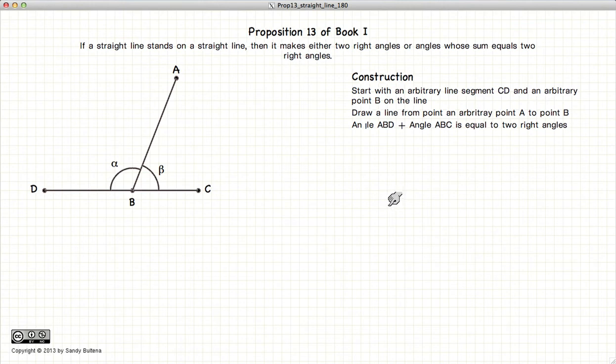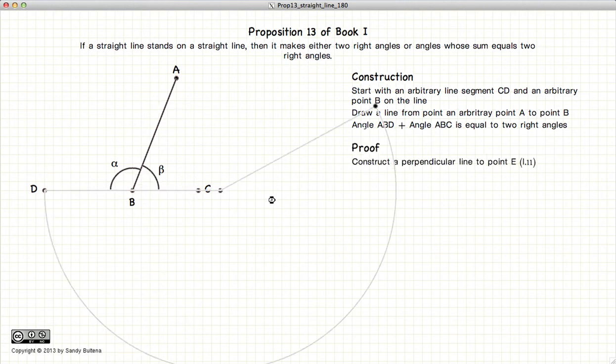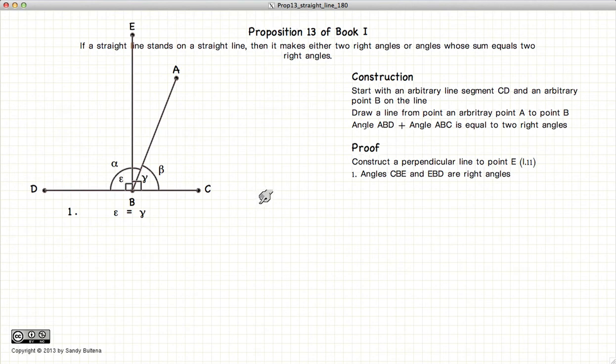First let's draw a line perpendicular to DC starting at point B. We'll label that line BE. Now the angles DBE epsilon is equal to the angle EBC gamma by definition, since this is a perpendicular line. So we have epsilon equals gamma.